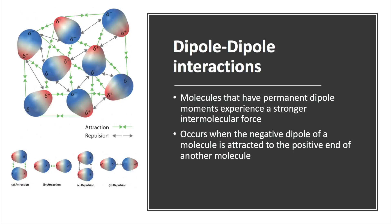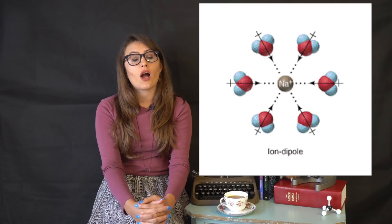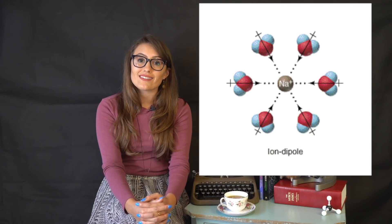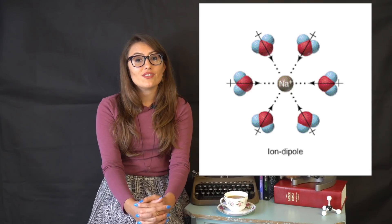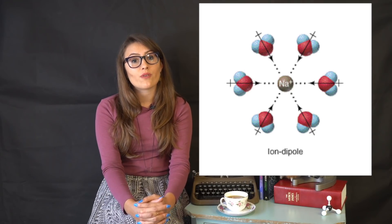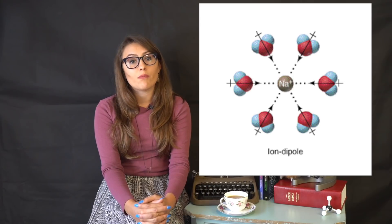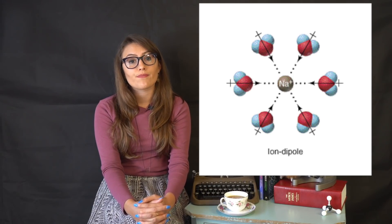Molecular dipoles can also be attracted to oppositely charged ions such as Na+ and Cl−. This is known as an ion-dipole interaction and is even stronger than dipole-dipole because the ion has a permanent positive or negative charge.